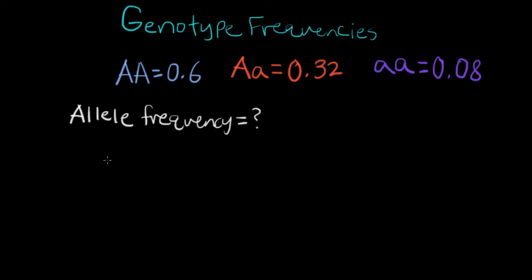To find the allele frequency, you need to first figure out which allele you want to figure out first. So let's say we want to find the dominant big A allele frequency. We need to take the genotype frequency of the homozygous dominant genotype plus half of the heterozygous genotype frequency. Because half of the alleles — one out of the two alleles for the heterozygous — is going to contribute the big A allele. So we only need half of their genotype frequencies to calculate the big A dominant allele frequency.